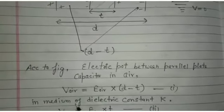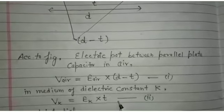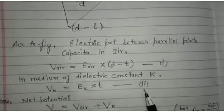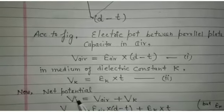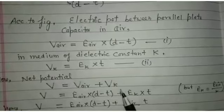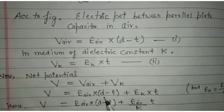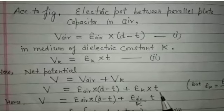In medium of dielectric constant K, then the value of V_K is equal to E into thickness t, equation second. Now net potential V is equal to potential in air plus potential in capacitor. Putting the value E_air is equal to d minus t plus E_K into t.